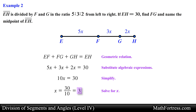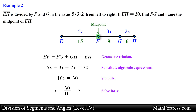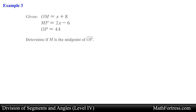With x equals 3, segment EF equals 15, segment FG equals 9, and segment GH equals 6. Notice that segment EF and segment FH are both equal to 15. This means that point F is the midpoint of segment EH since it divides segment EH into two congruent segments. This is our final answer.